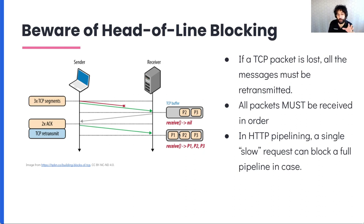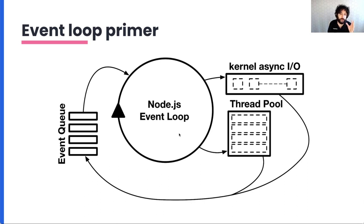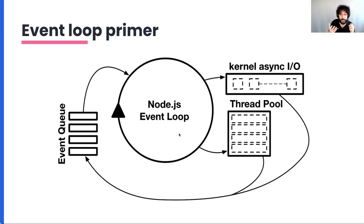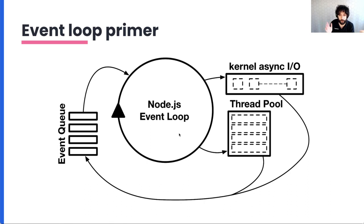The other important part we need to discuss before making a recommendation is the event loop. In the Node.js event loop, we have IO events. IO events can be produced by the kernel or by the ThreadPool, and those events get put into a queue. Once an event is there, Node.js can fetch that event and process it with JavaScript — that's all it does. With JavaScript, you can schedule more events to happen in the future, and those will be queued.